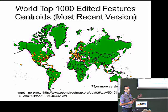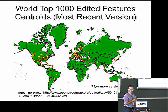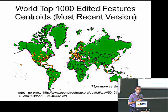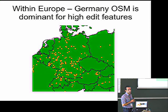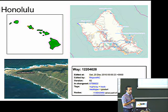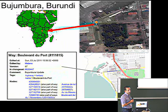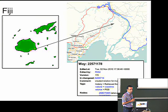We looked into planet.osm — Paul Kelly from Queen's University, Belfast wrote a nice piece of C code to pick out any version number we were looking for. The top 1,000 most edited features on OpenStreetMap have a minimum version of 73. Europe has quite a high percentage. Germany has the most high-edit features out of the top 1,000. In Honolulu, a track road at the northwest tip has been edited 82 times. In Central Africa, a very simple street received an unexpectedly high number of edits.